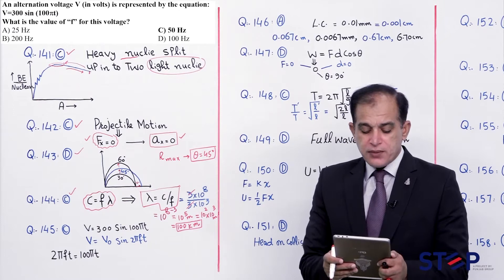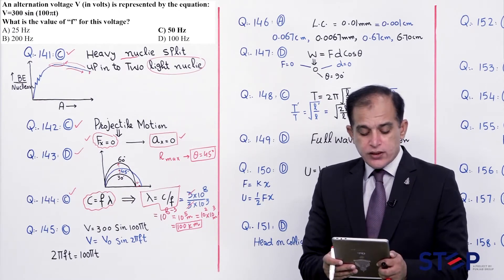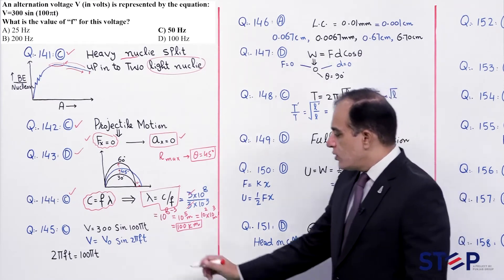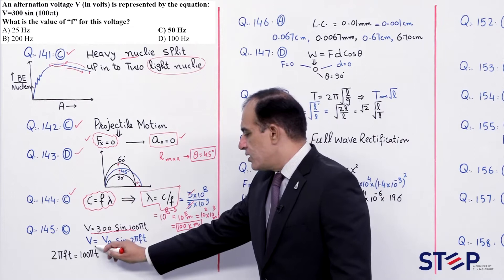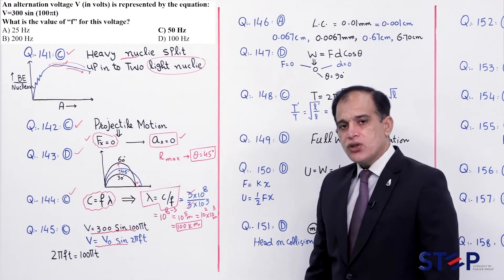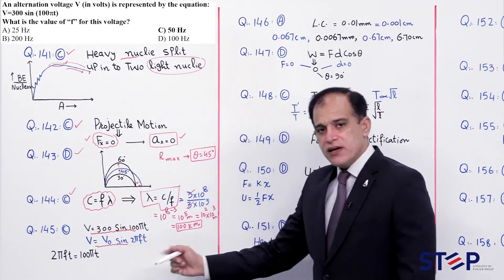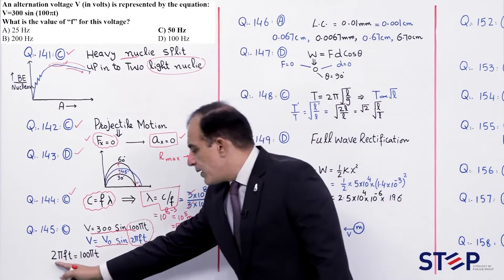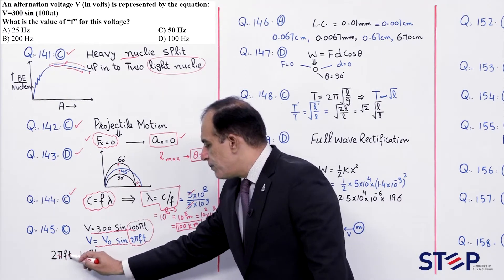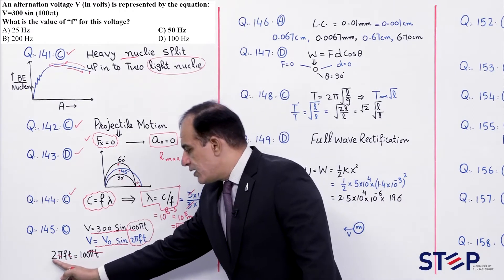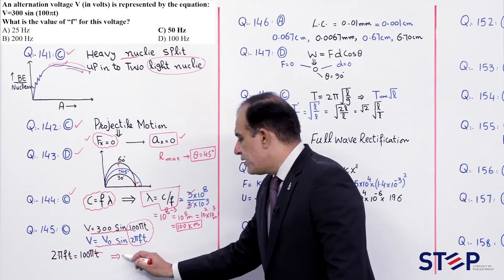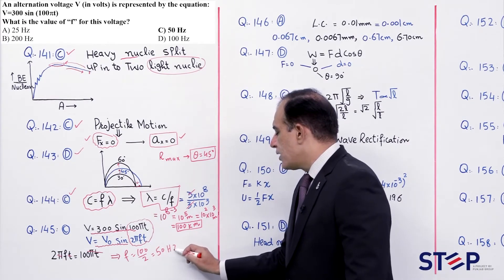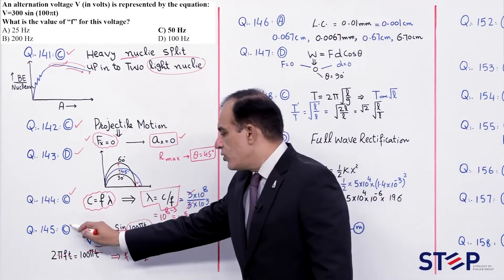Question number 145: An alternating voltage represented by an equation - what is the frequency? AC ki general equation: V = V₀ sin(2πft). Compare karke sine functions: 2πft = 100πt, pi t cancel, toh f = 100/2 = 50 Hz. Correct option: Charlie.